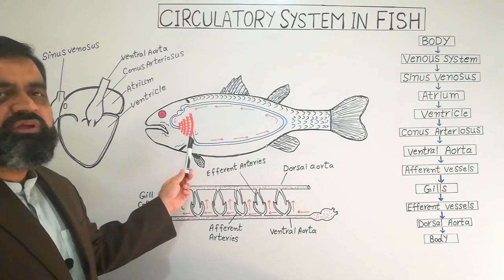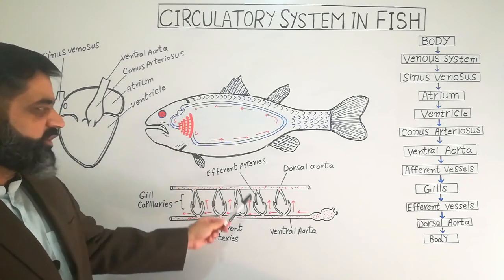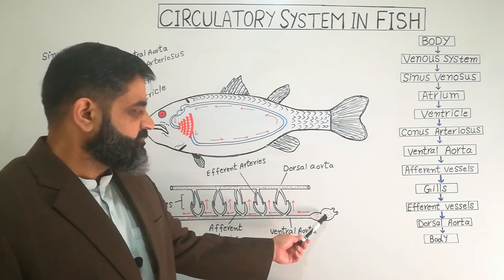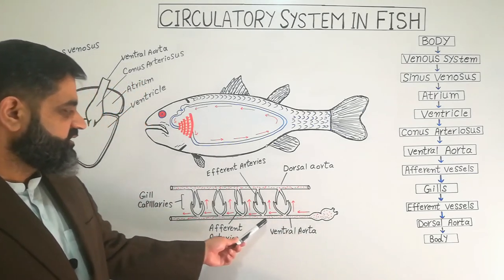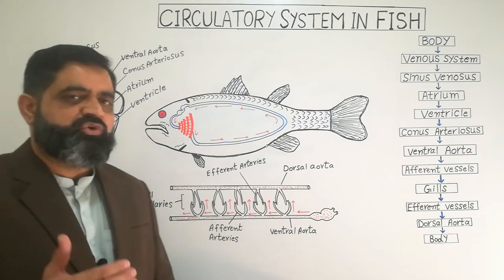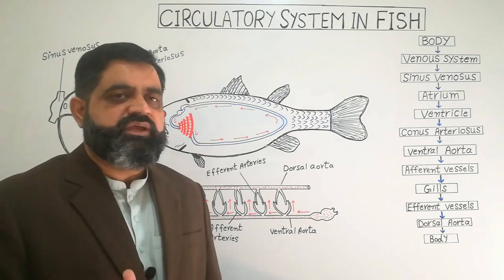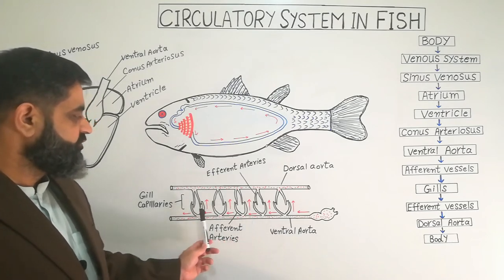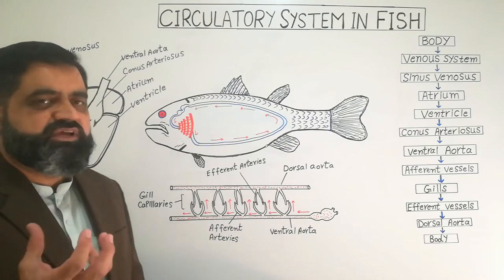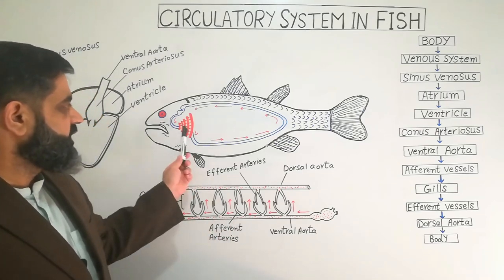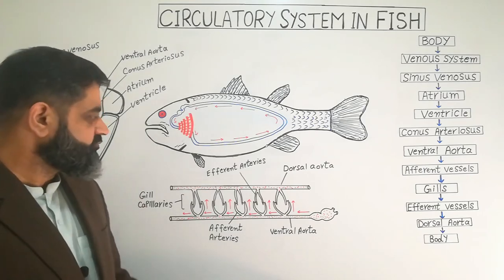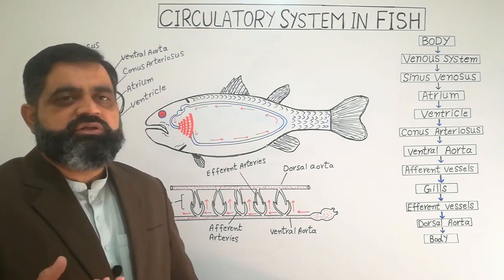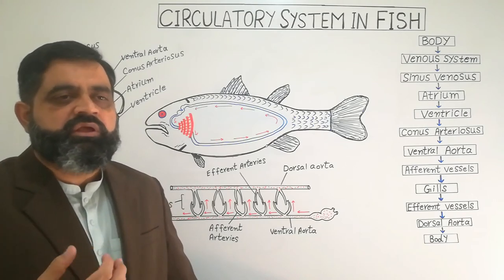Looking at the detailed diagram: the heart pumps deoxygenated blood into the ventral aorta. The ventral aorta divides into arteries, arterioles, and then capillaries. There are five branches from the ventral aorta, which divide and subdivide to form a network known as gill capillaries. These capillaries spread over the surface of the gills, where gaseous exchange takes place — CO2 from the blood is released and oxygen from the water is taken in, converting deoxygenated blood to oxygenated blood.